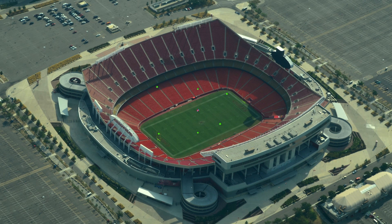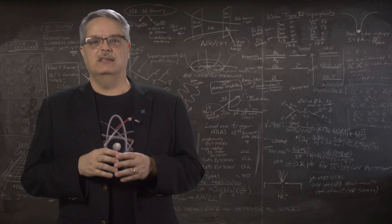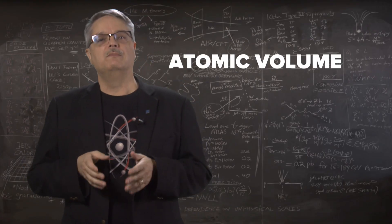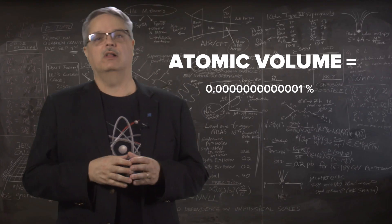Now think about that. If an atom consists of a few BBs on the fifty-yard line and six electrons zooming around in the volume of a football stadium, that means that the atom is almost entirely empty space. If we do the math, we find that, roughly speaking, the part of an atom that is occupied by matter is about one quadrillionth of the total volume.